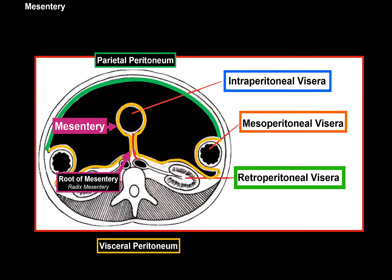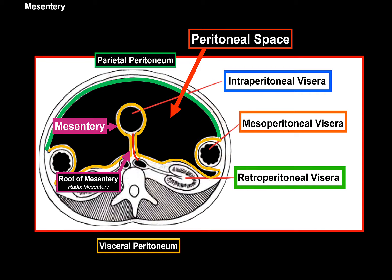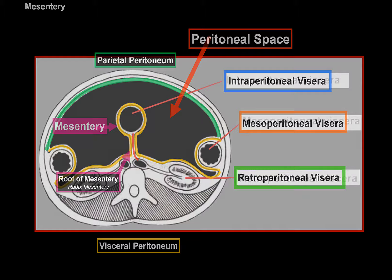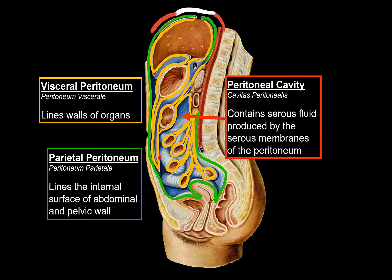The visceral and parietal peritoneum produce a serous fluid that goes into the peritoneal space — the space between them. Now, the only thing left to fully understand the peritoneum is the peritoneal space, so let's talk about that.